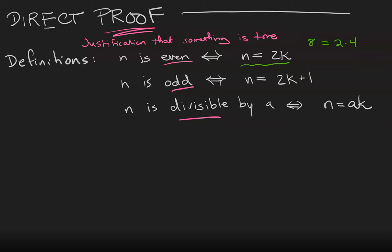n is odd if there exists an integer k such that n is equal to 2k plus 1. For example, 11 is equal to 2 times 5 plus 1.